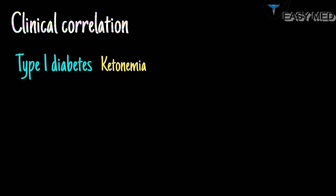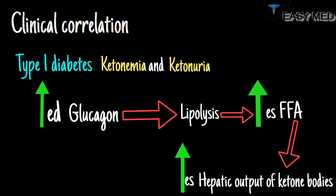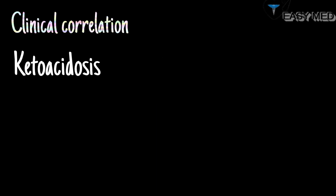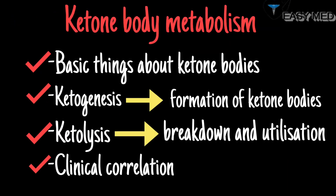In patients with type 1 diabetes, ketonemia and ketonuria are often seen. Increased levels of glucagon lead to lipolysis, which increases free fatty acids in plasma and ultimately increases the hepatic output of ketone bodies, leading to diabetic ketoacidosis — basically the rise of ketone bodies in the blood to a toxic level. Ketoacidosis is also seen in prolonged fasting and excessive ethanol consumption.